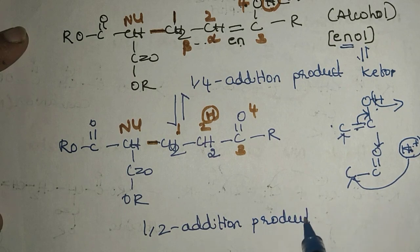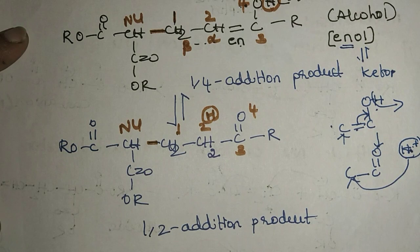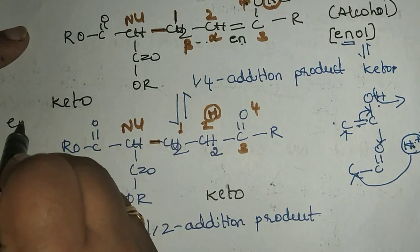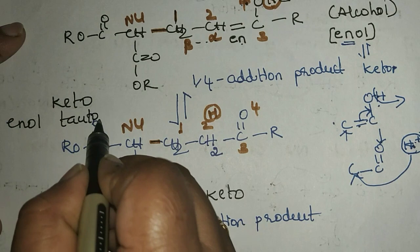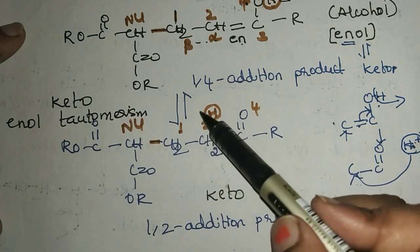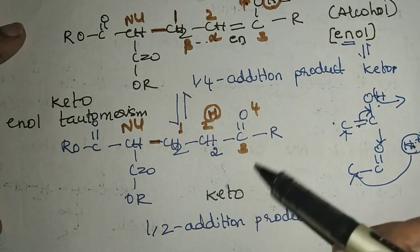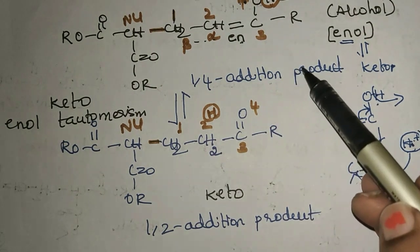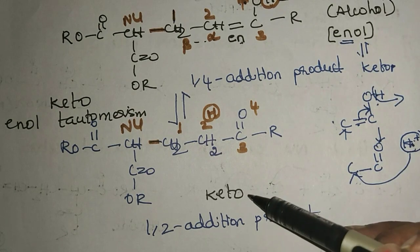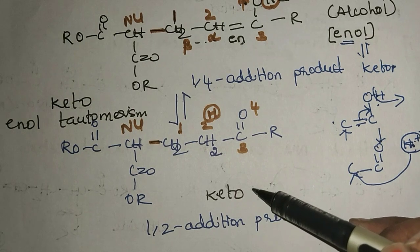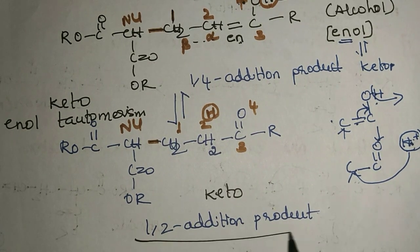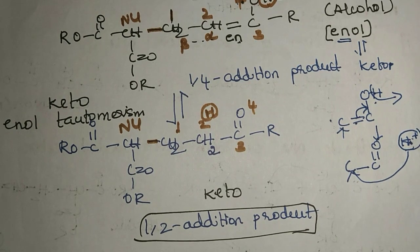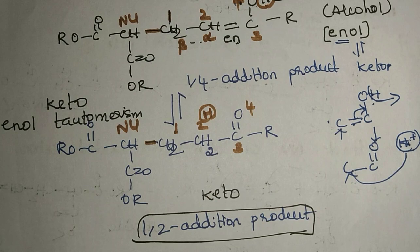This enol form undergoes keto-enol tautomerism — a dynamic equilibrium between the keto form and the enol form. By Michael addition, the 1,4-addition product (enol) undergoes tautomerism to give the final 1,2-addition product in keto form. This concludes Michael addition. Thanks for watching — please subscribe to the channel for more videos.